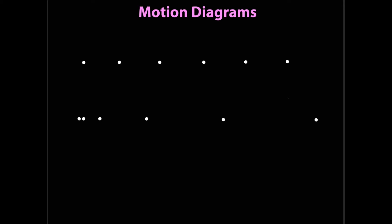The additions to a motion diagram are quite simple. Between the dots, arrows are added that represent the object's current velocity. Since these arrows are not changing size, the object is not speeding up or slowing down. A motion diagram also has one more arrow that is quite important: the change in velocity arrow. In this constant velocity case, the change in velocity arrow does not exist, because quite literally there is no change in velocity. Velocity is a vector — it has both magnitude and direction.